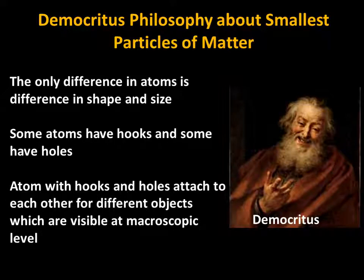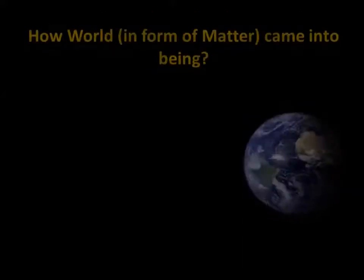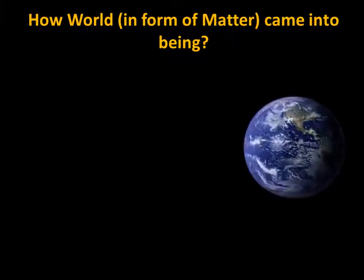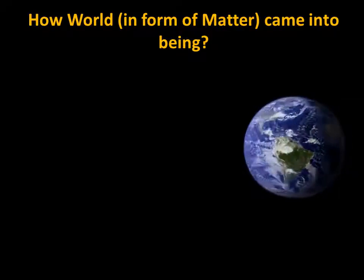Some atoms have hooks and some have holes, so atoms with hooks and holes pair with each other and form the different objects which we see at the macroscopic scale. According to Democritus, the objects we see with the naked eye are basically arrangements of hooked and holed atoms in different ways.